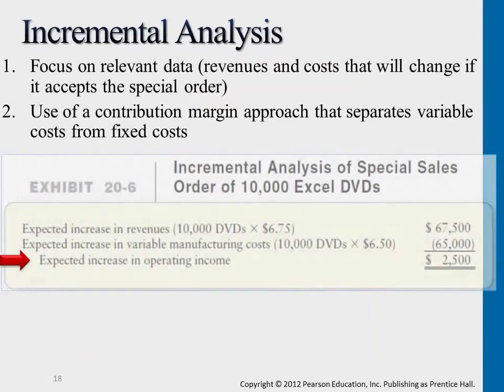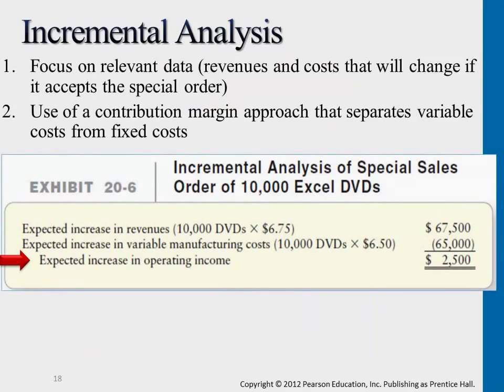Now let's take a look at this example. Going back to chapters 16 and 17, we had the Excel DVDs examples — remember there are regular DVDs and special DVDs. Let's say a customer comes in to purchase a large batch of DVDs, 10,000 discs at once, and they want to request a lower price. Originally it was $12 each; now they want it at $6.75. This is a huge discount if we actually do accept this.